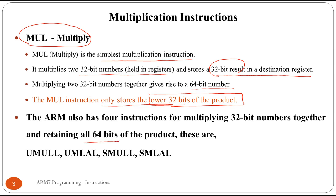The four long multiply instructions are: unsigned multiply long, unsigned multiply and accumulate long, signed multiply long, and signed multiply and accumulate long. Please note that in the MUL instruction the upper 32-bits are not stored - only the lower 32-bits are stored. Whereas in the long multiply instructions all 64-bits can be retained.